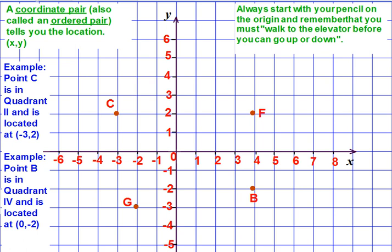A coordinate pair helps us tell where a point is in the coordinate plane. To find that, you always start at zero, and you're always going to go back and forth on the x-axis before you go up or down. Sometimes we say you have to walk to the elevator before you can go up and down.